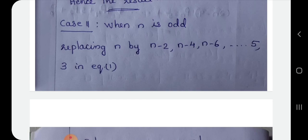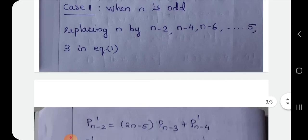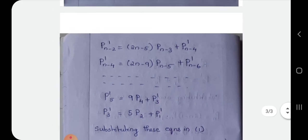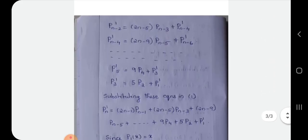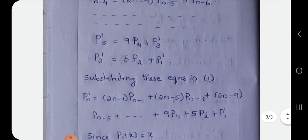When n is odd, n-2 and n-4 are also odd. The last odd value is 3, and since P1 of x equals x, then P1' of x equals 1. Also P0' of x equals 0. Following the substitution, P4 dash equals 5, P5 dash equals P3 dash, and these equations are substituted using equation 1.